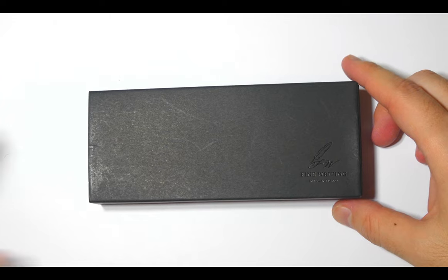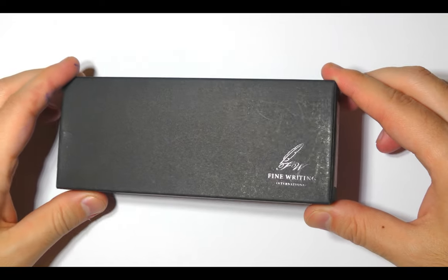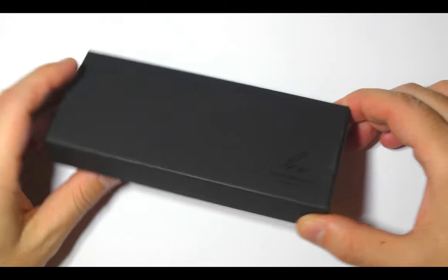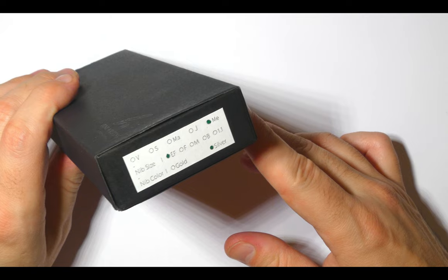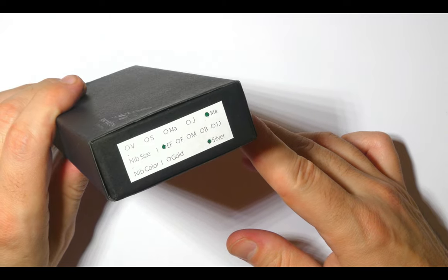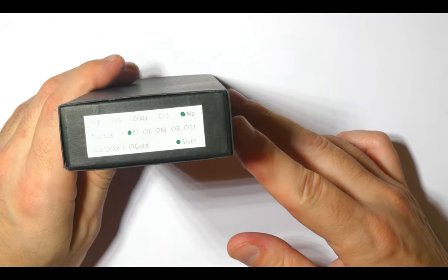The pen arrives in this black box with the Fine Writing International logo and the name on the bottom right. On the side you can read the nib size, in this case EF for extra fine, and the nib color silver.